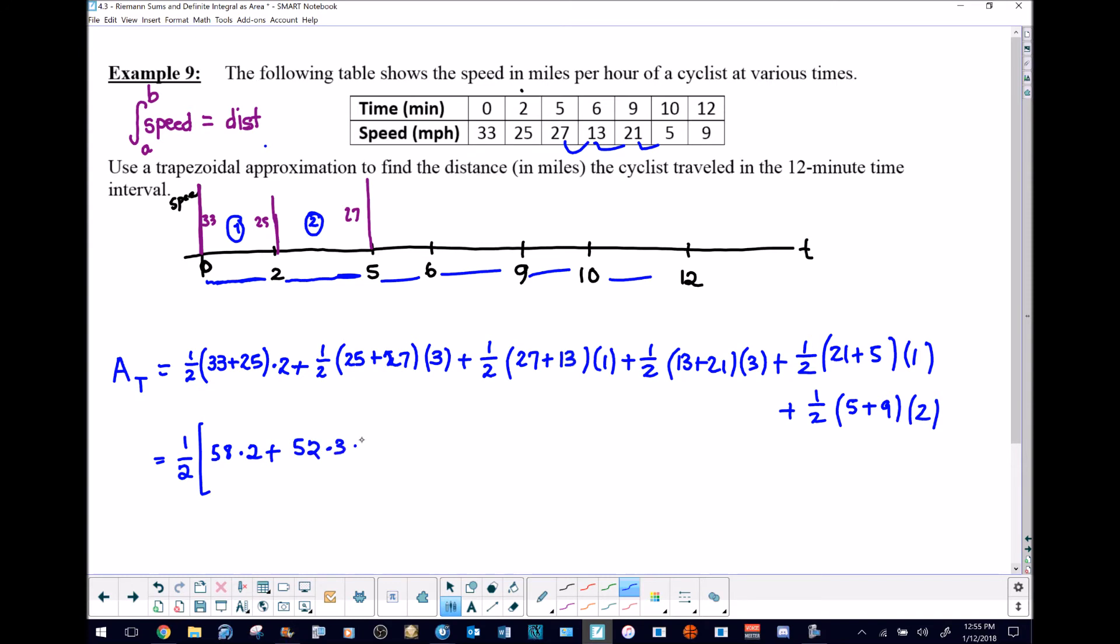27 and 13 is 40 multiplied by a 1. 13 and 21 that would be 34 multiplied by a 3. 21 and 5 is of course 26 multiplied by a width of 1. 5 plus 9 is 14 multiplied by 2.